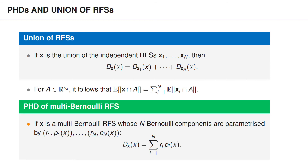One reason this result is useful is that it directly gives us the PHD of a multi-Bernoulli random finite set. Suppose boldface x is a multi-Bernoulli random finite set whose N Bernoulli components are parameterized by R1, P1 of x; R2, P2 of x; and so on. Since the PHD of a single Bernoulli process is its existence probability times its spatial PDF, it follows that the PHD of this multi-Bernoulli process is the sum over i from 1 to N of Ri times Pi of x. It's also simple to generalize this result to Poisson-multi-Bernoulli random finite sets.